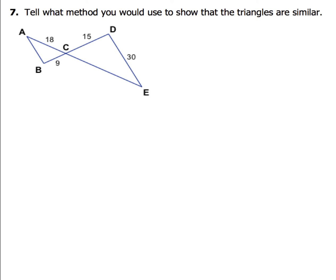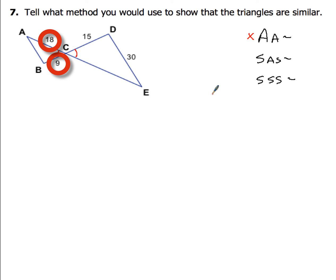For example 7, tell what method you would use to show that the triangles are similar. We have three options: angle-angle, side-angle-side, or side-side-side. The angle in the middle is formed by vertical angles, so those two are definitely congruent. I don't know anything about the other angles, so angle-angle is out. I'm only given two sides per triangle — 9 and 18 for triangle ABC, 15 and 30 for triangle DEF — so side-side-side is also out.